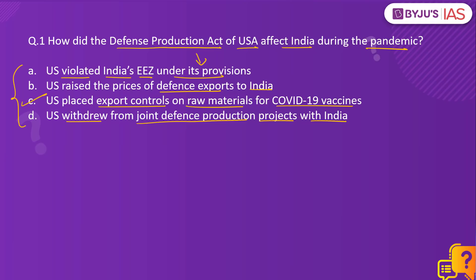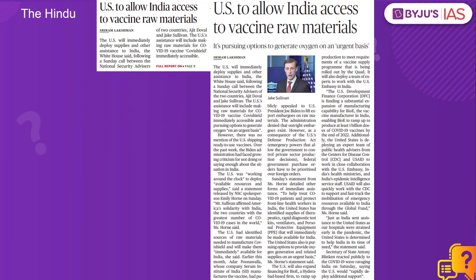Under this act, the United States placed a set of export controls on raw materials related to COVID-19 vaccines. This directly affected the production of vaccines in India by the Serum Institute. According to an article in The Hindu, the United States has decided to allow India access to vaccine raw materials following a conversation between the two national security advisors.